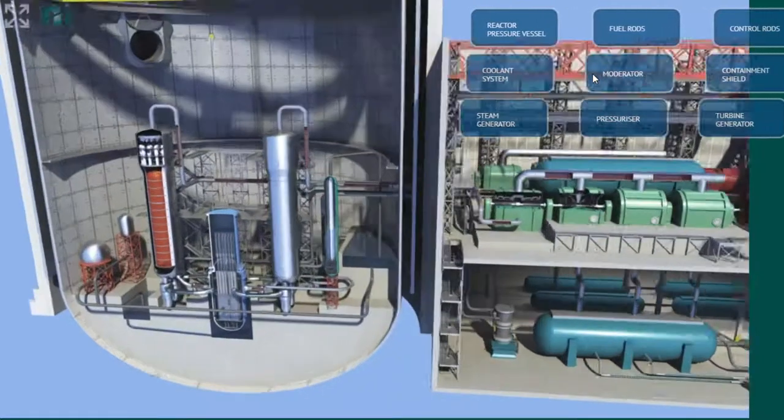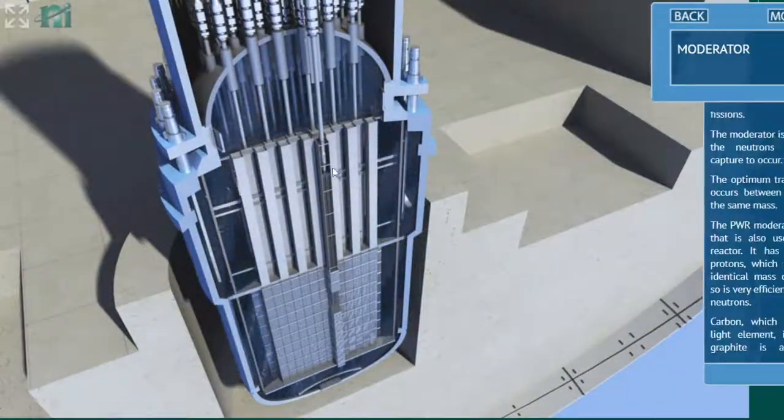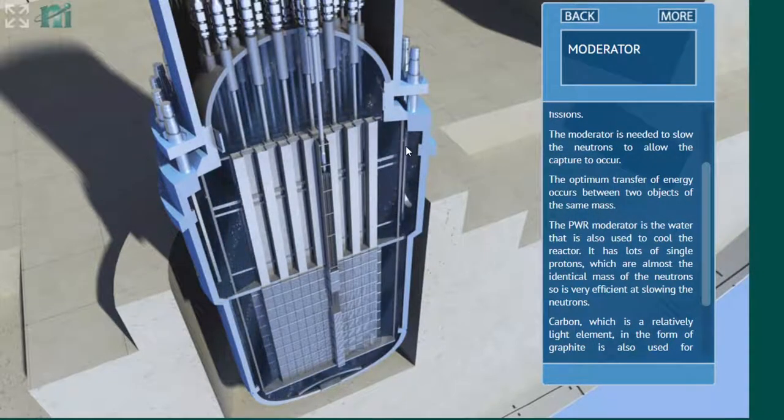Next, moderator. We are always zooming to the same place. Moderator is water. So in a PWR reactor, the moderator and the coolant are the same thing, the water. The moderator is meant to slow down neutrons so they have a higher probability of hitting another fissile element and undergoing chain reaction.